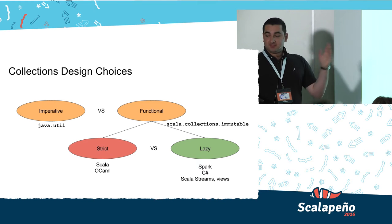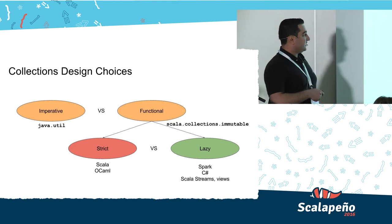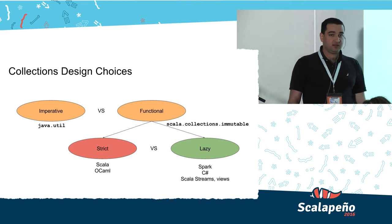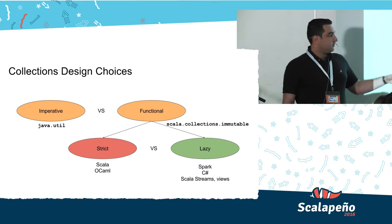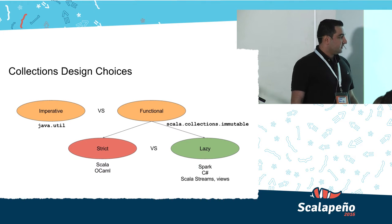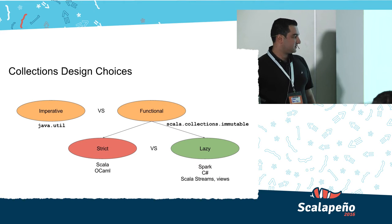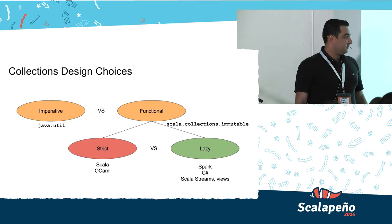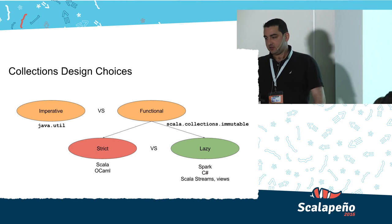The collection design choices: most of us at first came from the Java world and know all the imperative things — for loops, running over collections via the Java utility library — versus the functional way, where in Scala we work with immutable functional collections. We can divide it into two groups: the strict evaluation that Scala uses (and OCaml), versus lazy evaluation that we can use with Spark, C-sharp, Scala streams, and Scala views, which will be added in future versions of Scala.